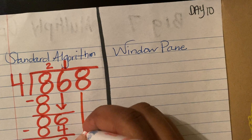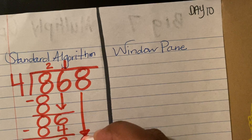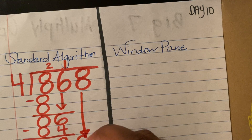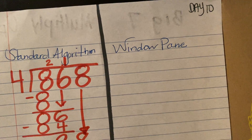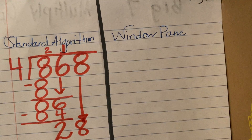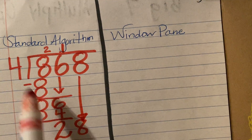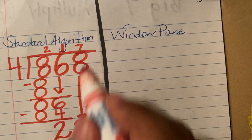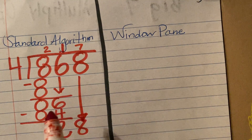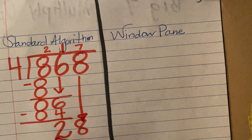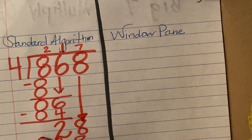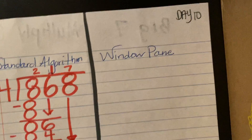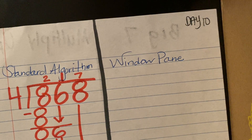We're going to bring down our eight and we have 28. We ask ourselves: four can go into 28 how many times? That's seven. Four times seven is 28. When we subtract that out, we get a zero. Therefore, my quotient is 217.